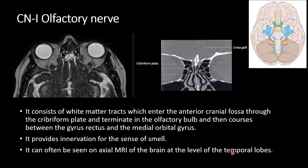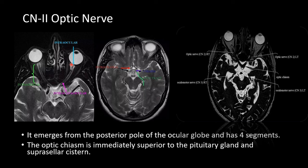The second cranial nerve is the optic nerve. It emerges from the posterior pole of the globe and has four segments: the intraocular segment, the intraorbital segment, the intracanalicular segment which runs in the optic canal, and the intracranial segment. The optic chiasm is immediately superior to the pituitary gland and suprasellar cistern.